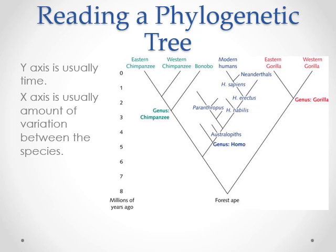Here's how you read a tree. Usually on one axis you're going to have time, and on the other axis genetic differences. In this case, 8 million years ago we had a forest ape. Over time, that forest ape split into different groups: the chimpanzee group, the homo group, and the gorilla group. Chimpanzee and homo split about 6 million years ago. When did the western chimpanzee and bonobo split from each other? About 3 million years ago.